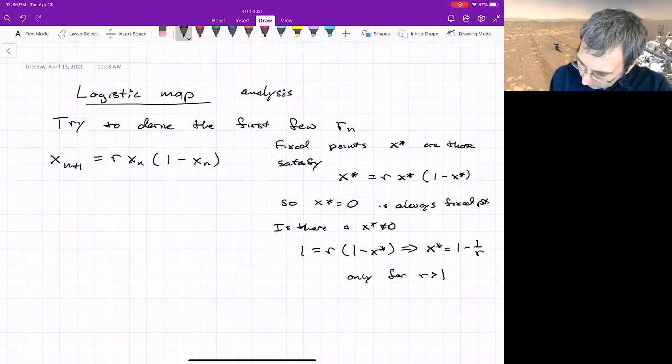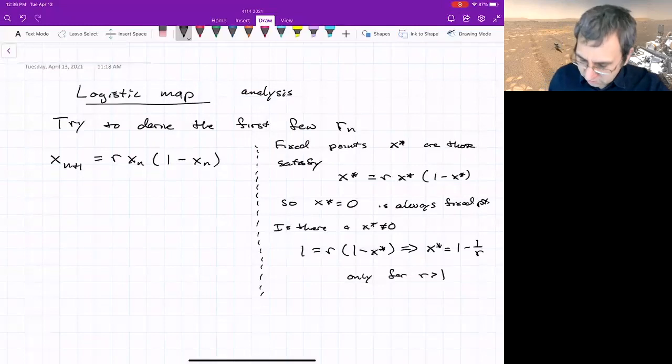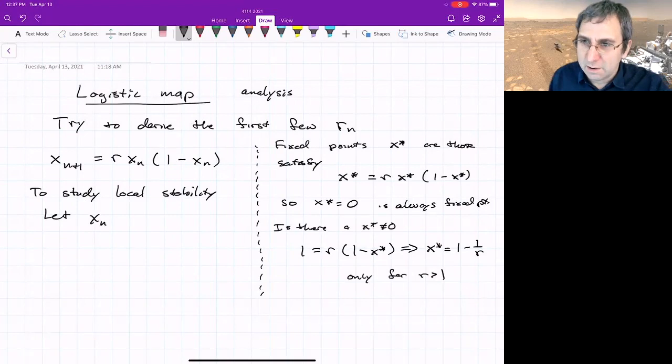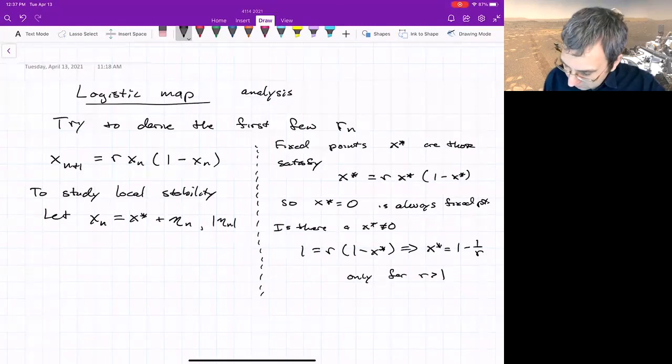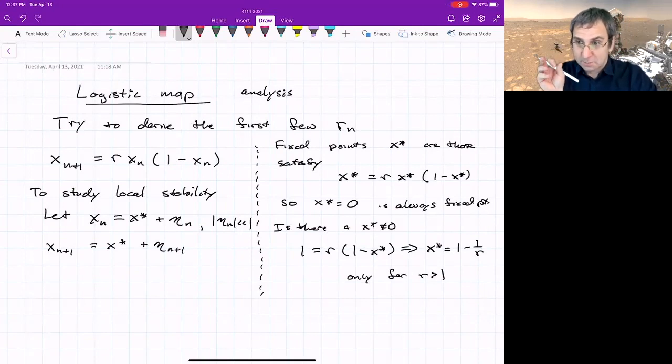What about the stability? We already looked at how you formulate stability in a previous lecture. To study the local stability, we let x_n = x* + eta_n, where eta_n is a small displacement away from the fixed point.